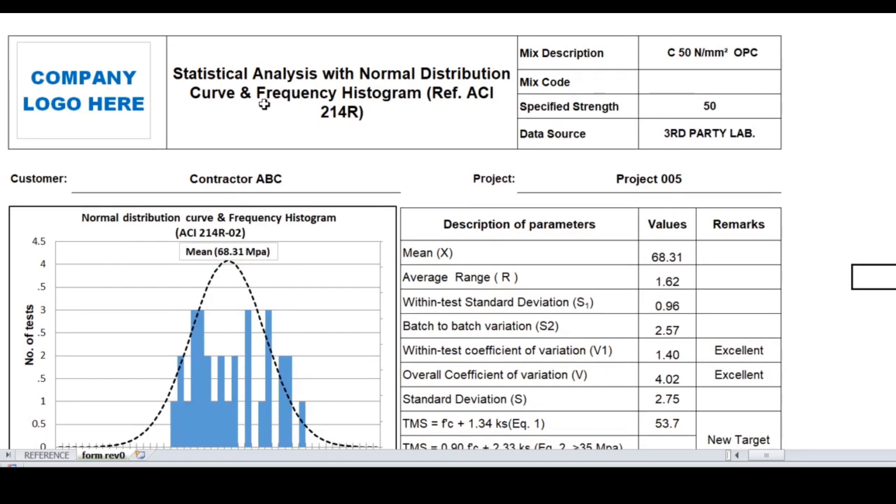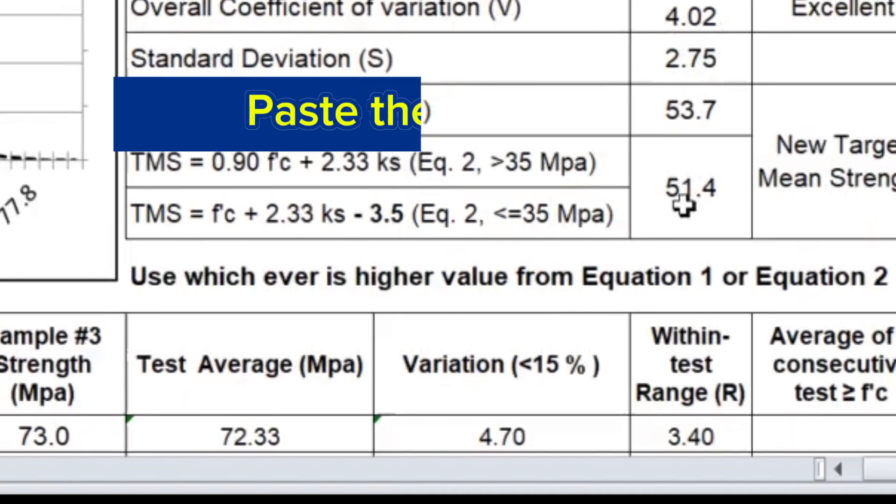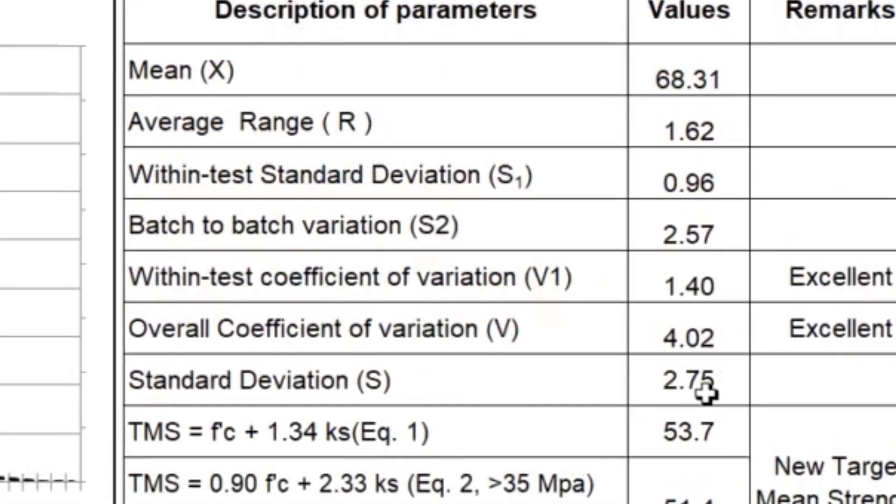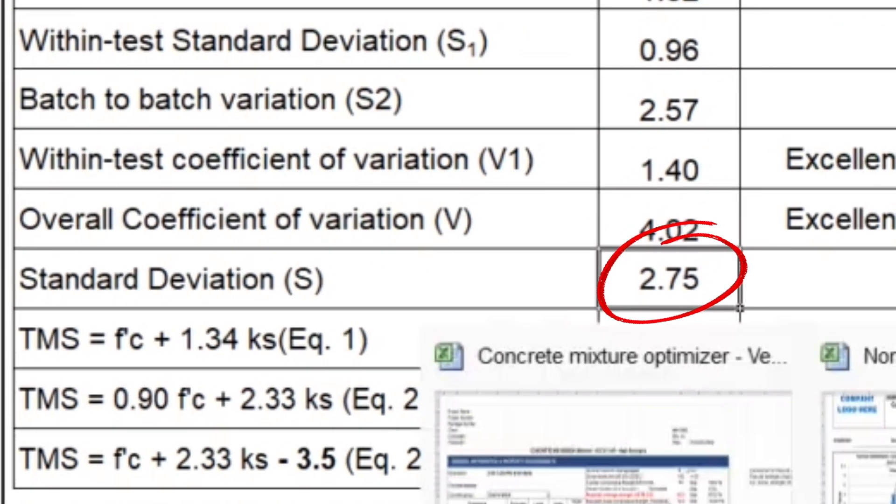which is the statistical analysis with normal distribution curve and frequency histogram. After transferring 30 strength test values below this table, and based on these statistical data, the result average strength is 68.3 MPa and the standard deviation is 2.75 MPa.